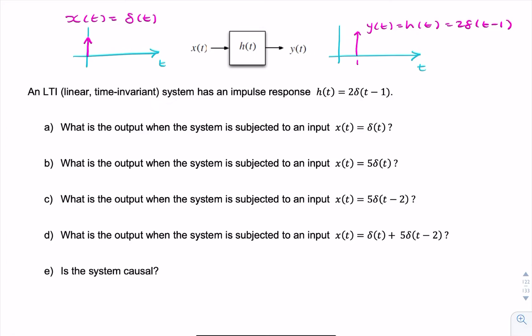The question then asks, what would the output be if the input were an impulse? If the input was an impulse, the output by definition would be the impulse response. So the answer to part A, by definition, would be y(t) = 2δ(t-1). This is by definition of the impulse response.